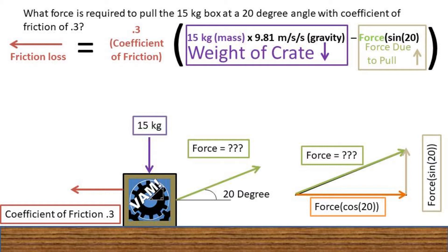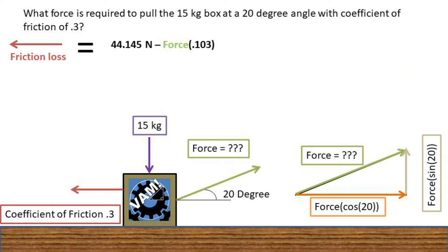Now we can multiply out and calculate out the equivalent value of this equation. We are now left with the friction loss being equal to 44.145 newtons minus the pull force times 0.103.